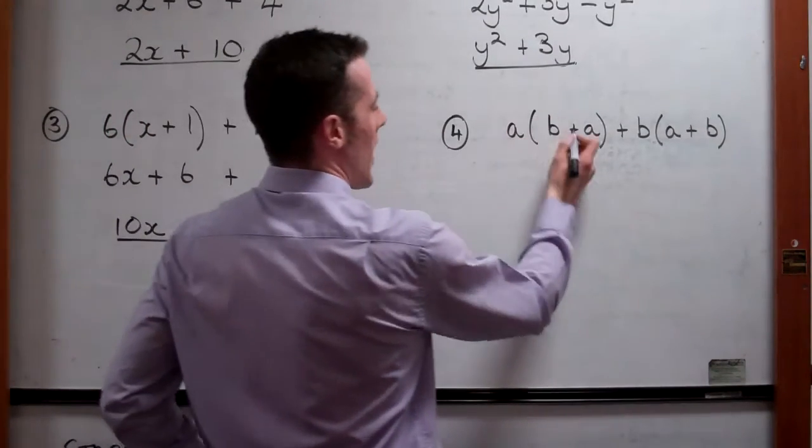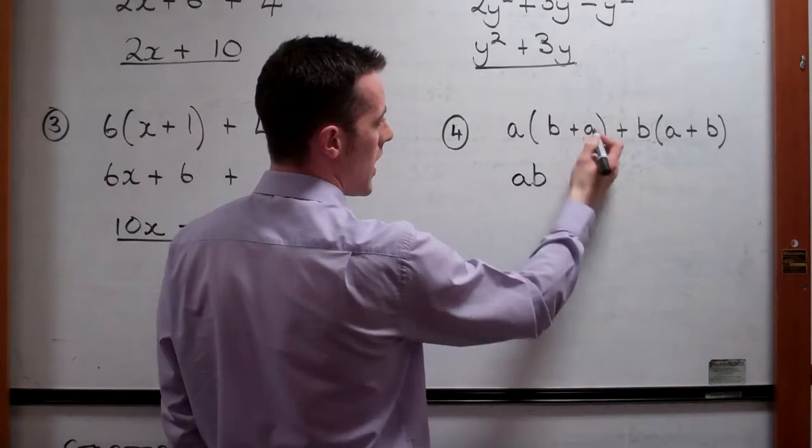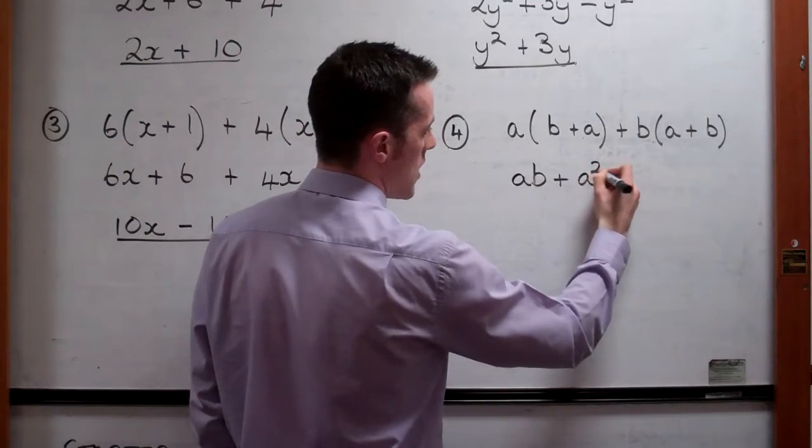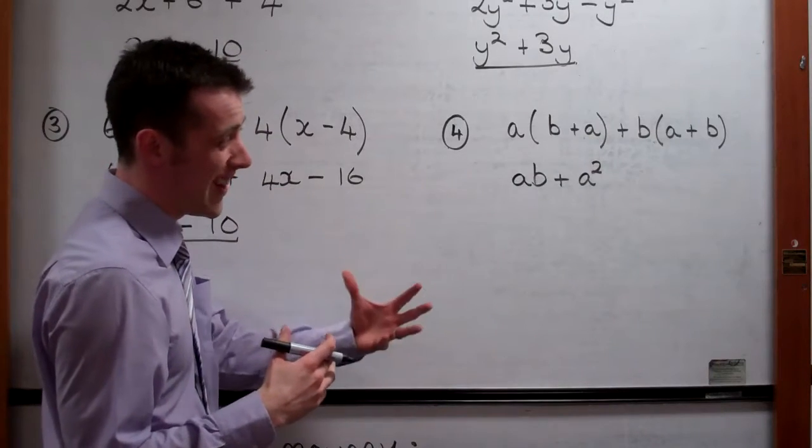Here's another one. a times b gives us ab. And then we've got a times a gives us plus a squared. So this one's slightly more difficult because we're dealing with only letters.